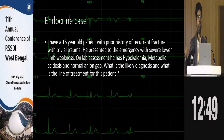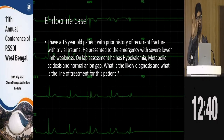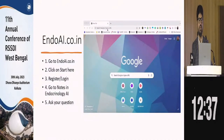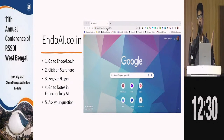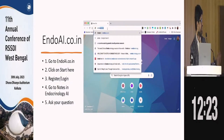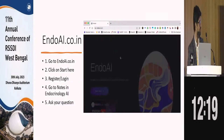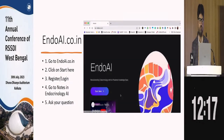These are basic inputs which even an MBBS student could provide. If you ask your emergency resident, he'd quickly tell you: 16-year-old boy, history of recurrent trauma, presented with lower limb weakness, has hypokalemia, metabolic acidosis with normal anion gap. Let's see if AI — like a first-year DM resident — will be able to solve this case.